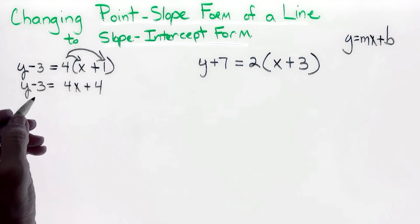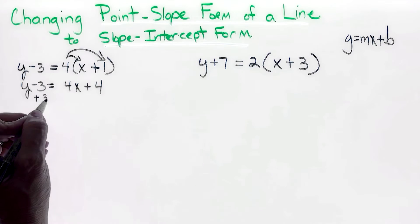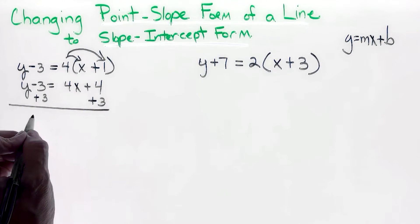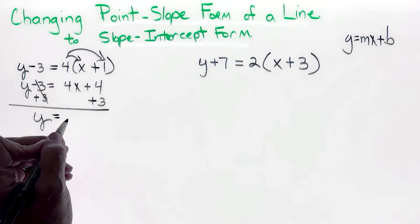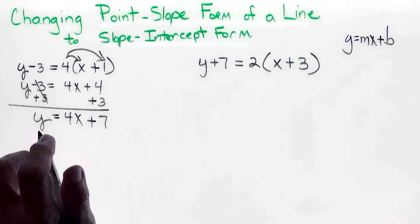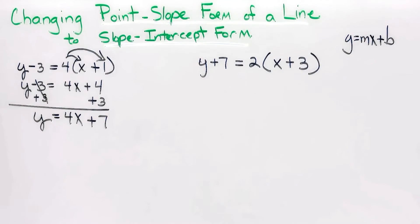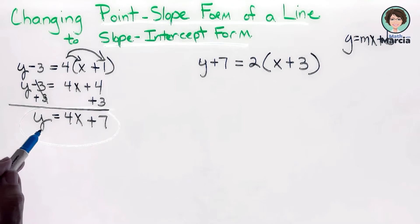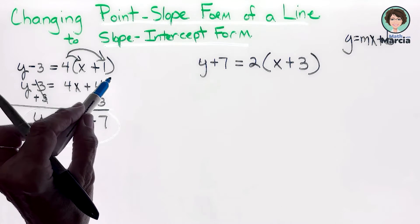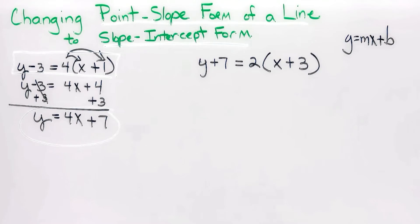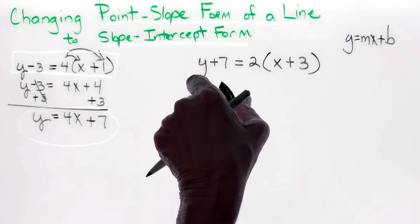To get it in slope-intercept form, the number must move to the other side because y must be alone. So y equals 4x plus 7, and that is now in slope-intercept form — we started in point-slope form. Let's try another one: y minus 7 equals 2 times the quantity of x plus 3.